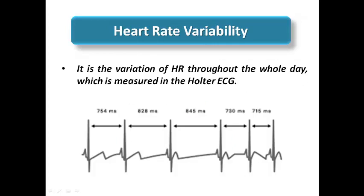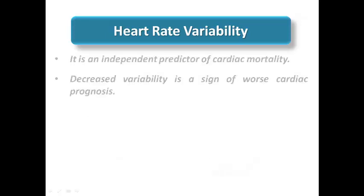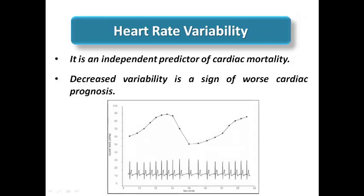Heart rate variability is a measure present in Holter ECG — not surface ECG — as it reflects variation in heart rate throughout the whole day. It is considered a normal physiological phenomenon, and reduced heart rate variability is an independent predictor of cardiac mortality. In normal conditions there should be heart rate variability throughout the day; when this variability is reduced or diminished, it is a sign of worse prognosis. In patients with LV dysfunction, heart rate variability is decreased and reflects reduced sympathetic and parasympathetic innervation.